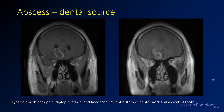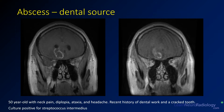On coronal imaging you can see this ring-enhancing collection with a thinner wall on the side towards the ventricle, and you can actually see where it's free to spill pus into that right lateral ventricle. There's also an adjacent irregular, ill-defined peripherally enhancing mass — again, an abscess. This patient was positive for Strep intermedius, likely from the dental work.